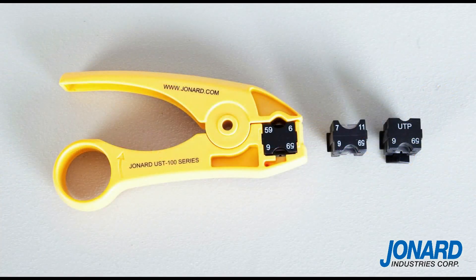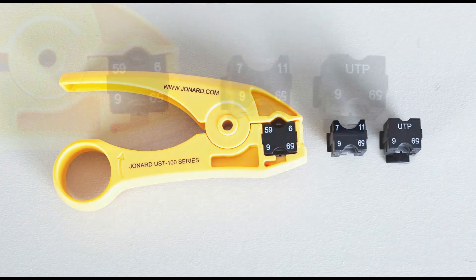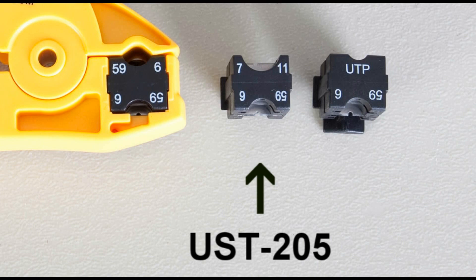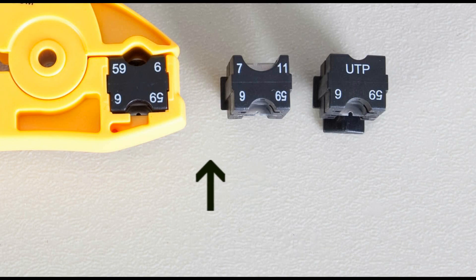The UST100 series starts with the tool itself and changes based on the cartridge chosen. The UST100 model uses the UST205 cartridge for RG59, RG6, RG7, and RG11 coaxial cables.